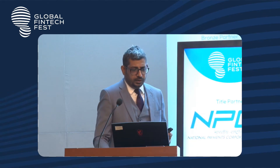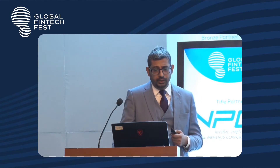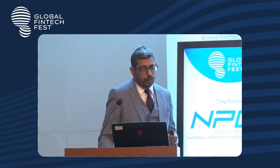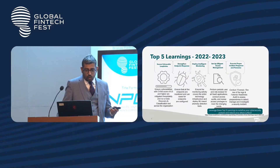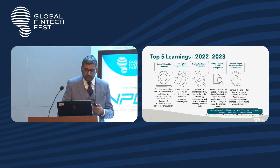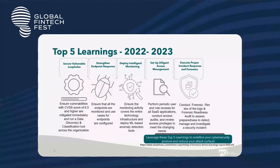Let me emphasize the top five learnings. The first is securing vulnerable loopholes — vulnerabilities with a CVSS score of 6.5 and higher should be mitigated immediately, and you should run data discovery and classification tools across your organization. The second is strengthening endpoint responses — ensuring all endpoints are monitored and use cases are properly configured. The third learning is deploying intelligent monitoring, ensuring monitoring covers the entire technology infrastructure and deploying machine-learning-based anomaly detection tools.